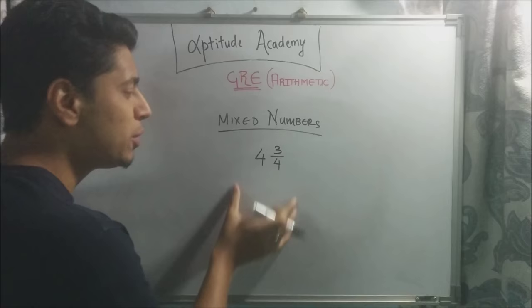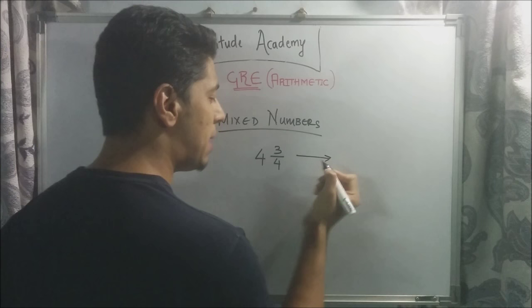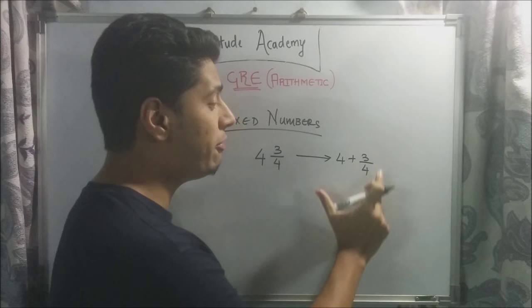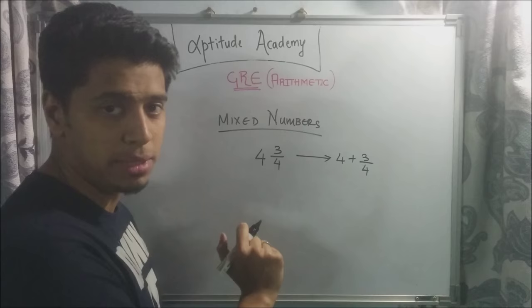Now the final thing to look into are mixed numbers. A mixed number looks something like this: 4, 3 by 4. And I know most of you have seen them. So what you do is the expansion for this is 4 plus 3 by 4. Now why are they called mixed numbers? They're called mixed numbers because you have two different types of numbers. You have 4 that's an integer and you have 3 by 4 that's a fraction. So since they're both not the same, you have an integer and a fraction, hence they're known as mixed numbers.